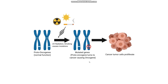Oncogenes are where genes are excessively producing active proteins, which can lead to unregulated cell growth. This promotes cell growth and proliferation. It is activated by gain-of-function mutation, gene amplification, and hypomethylation. And this is commonly found in sporadic tumors.